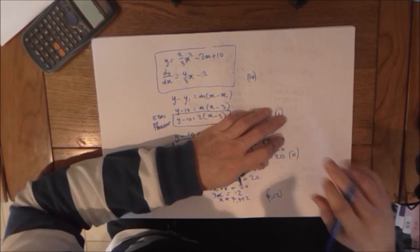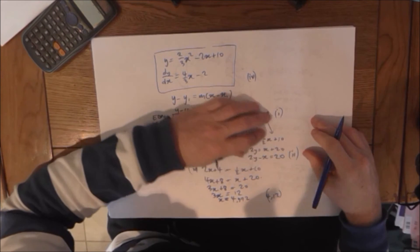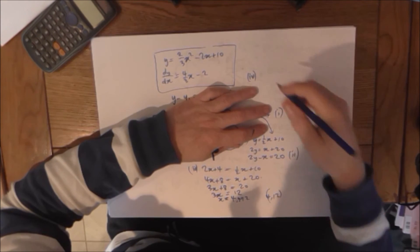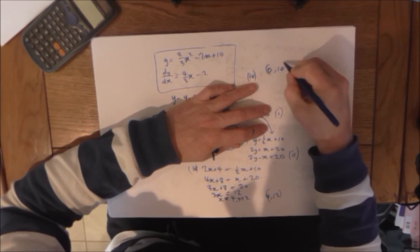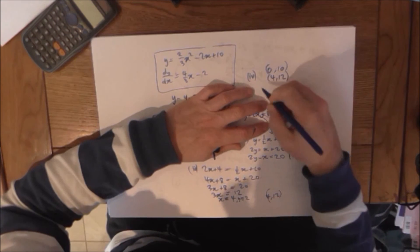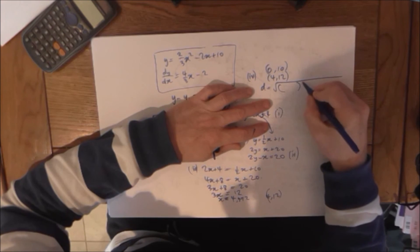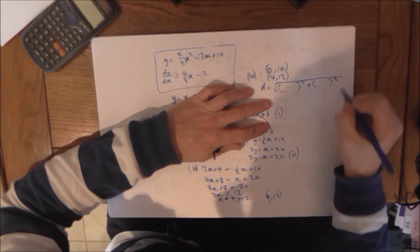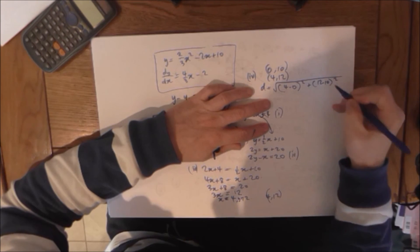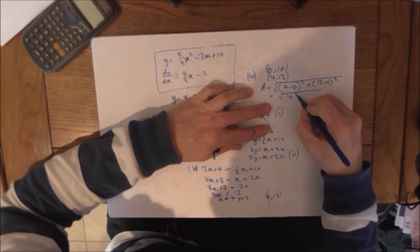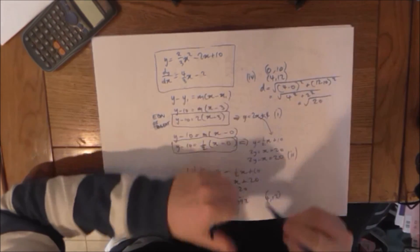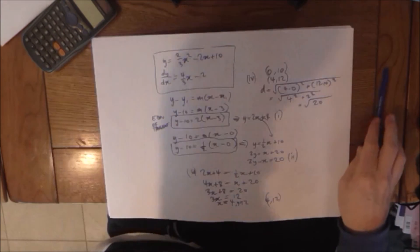What's the distance between B and C? We have B. B was where the normal was. That's 0 comma 10. And the intersection point is what I just found out. We have a formula for that. Two differences squared and then added. The difference of the x's. The difference of the y's. There you go. So it's the square root of 20 is the distance between them.